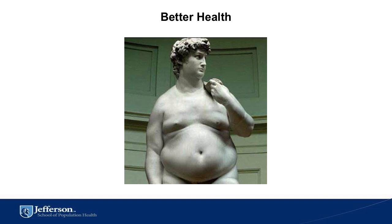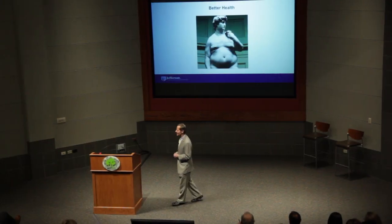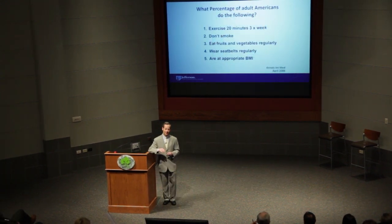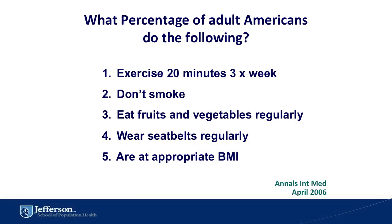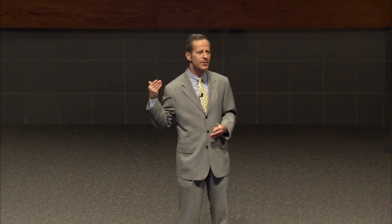I stole this from Sue Denser at the Robert Wood Johnson Foundation. This is, of course, Michelangelo's David — this is the American version of his famous sculpture in Florence, Italy. Let me show you what goes behind this. So we'll do another audience participation. If you know the answer, don't scream it out. What percentage of adult Americans do all five of these things: exercise at least 20 minutes three times a week, don't smoke cigarettes or cigars, eat their fruits and vegetables, wear a seat belt, and are close to an appropriate body mass index? Give me a number — what percentage do all five things regularly?